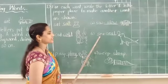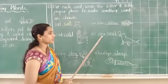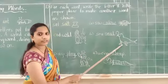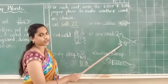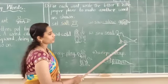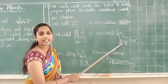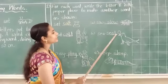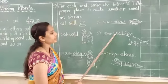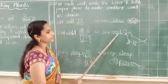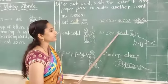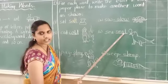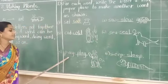Fourth one. S-E-A-C. By seeing this picture — is this C? No, this is an animal. Which animal is this? Seal. Yes. We should write L here — after A — it will become S-E-A-L. Next one.